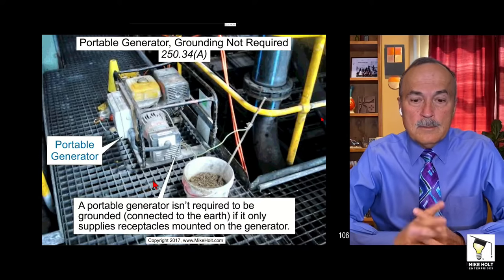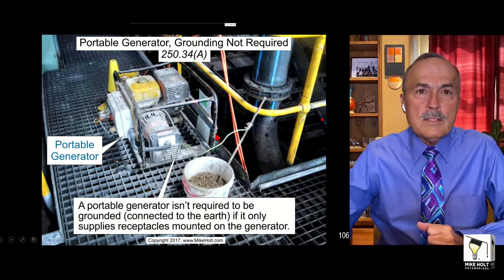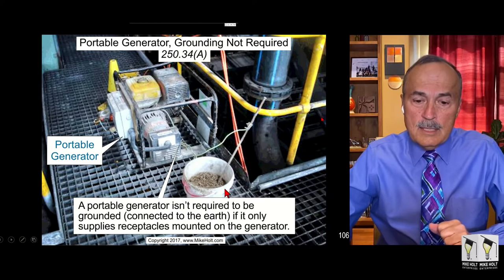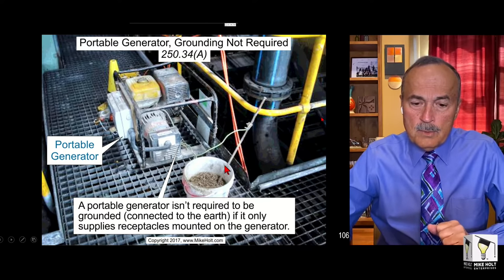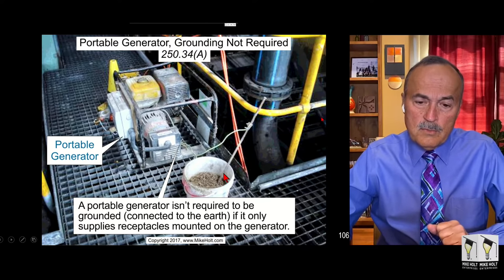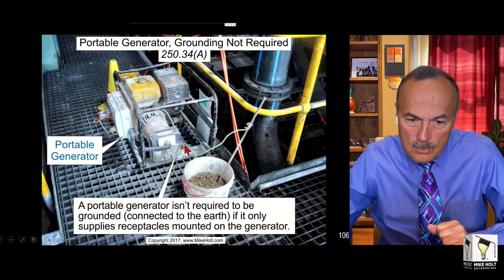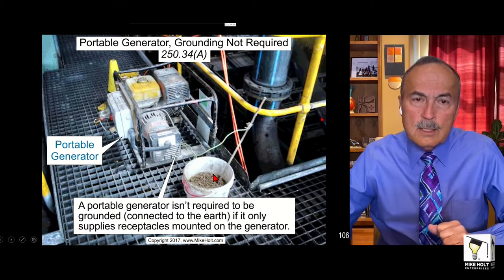Eric Stromberg gave me this one - here's a portable generator. Somebody thinks you've got to ground the generator, so they take a five-gallon bucket, put some dirt in there, get a three or four-foot piece of ground rod with a wire, and connect it somewhere to the frame of the generator.